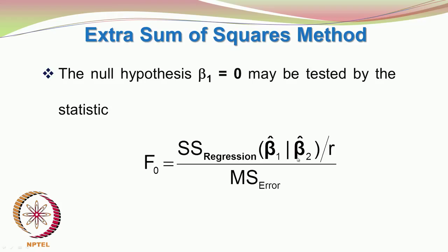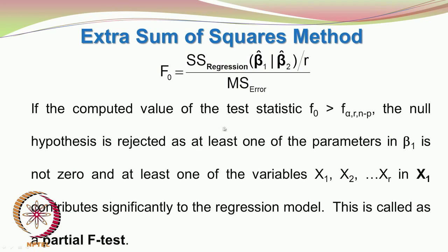Beta 2 hat and beta 1 hat are not necessarily single parameters — they represent a block of parameters. They are actually column vectors, as discussed in the previous class. If the computed value of the test statistic F0 is greater than F alpha with r numerator degrees of freedom and n-p denominator degrees of freedom, then the null hypothesis is rejected, as at least one of the parameters in beta 1 is not zero. This is called the partial F test.